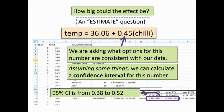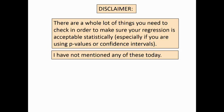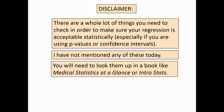Disclaimer: there are a whole lot of things you're supposed to check to make sure your regression is statistically acceptable, especially if you're using p-values or confidence intervals. If all you want is a line of best fit that's fine, but for p-values or confidence intervals you're supposed to check the assumptions. I haven't mentioned any of them today, but for your own future reference, statisticians are very particular about this because the probabilities don't check out properly otherwise. You can look them up in books such as 'Medical Statistics at a Glance' or a book literally called 'Intro Stats'.